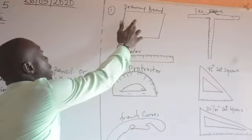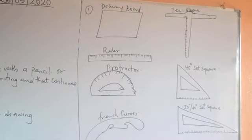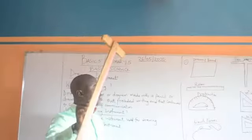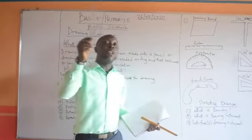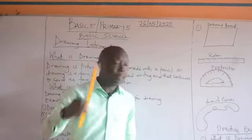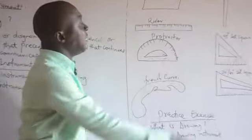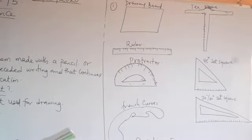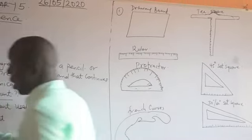These are some of the examples of drawing instruments. This is a drawing board — a good example of a drawing board. This is a T-square. We also have a ruler. This is a plastic ruler, this is a paper ruler, and this is a wooden ruler. It also has a protractor, the 45-degree set square, the 30/60-degree set square, and a French curve.